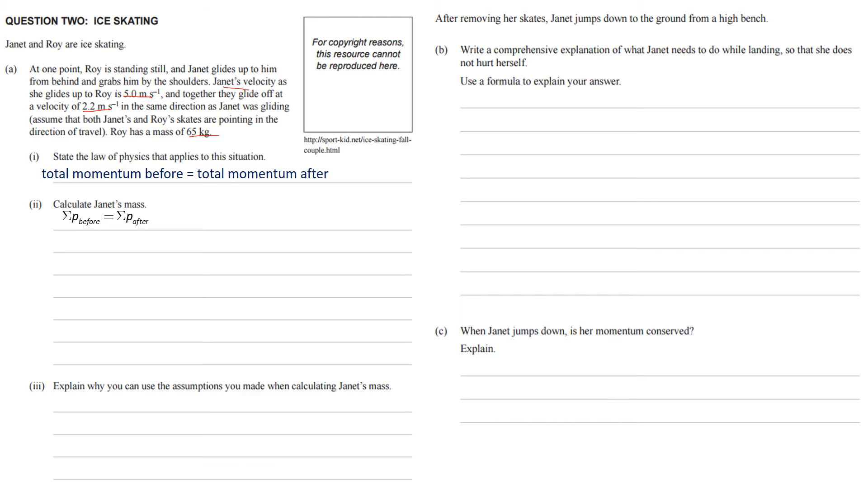Which we can represent in this numeric form, sigma P, here means the sum of P, the sum of the momentum before equals the sum of the momentums afterwards. So we start checking all the momentums.